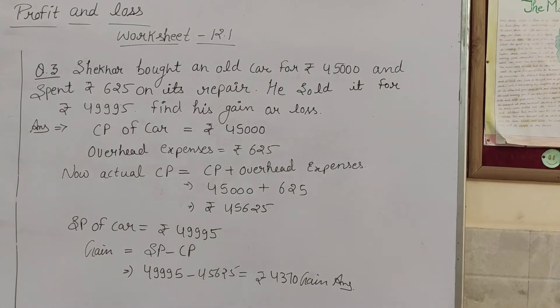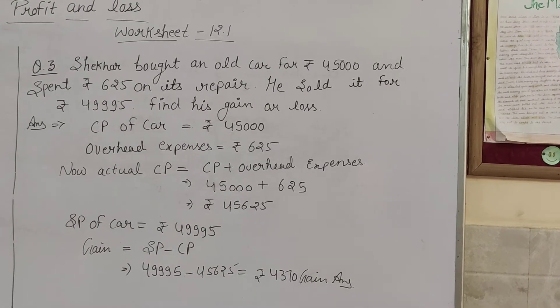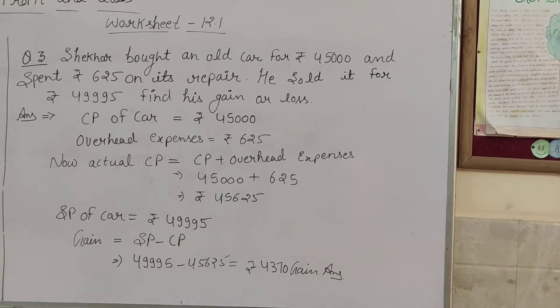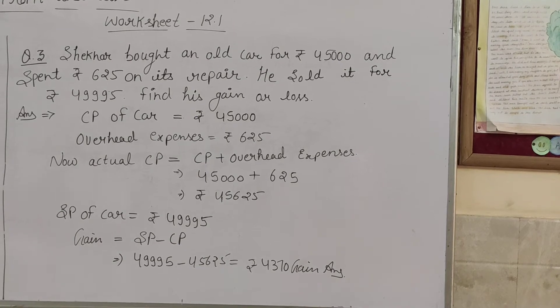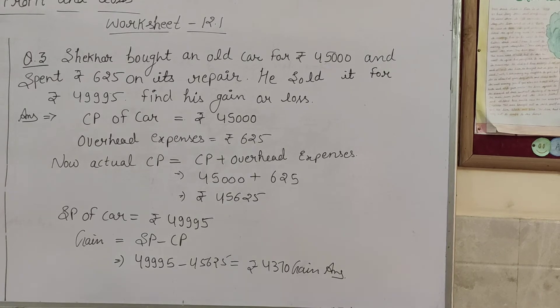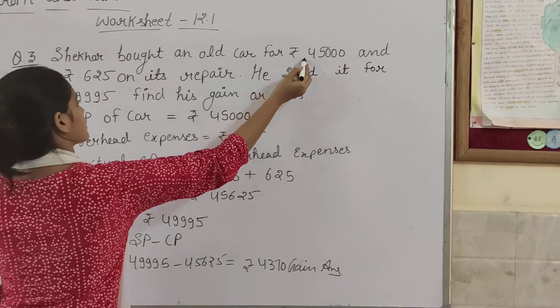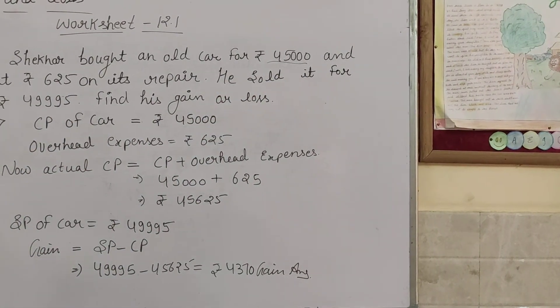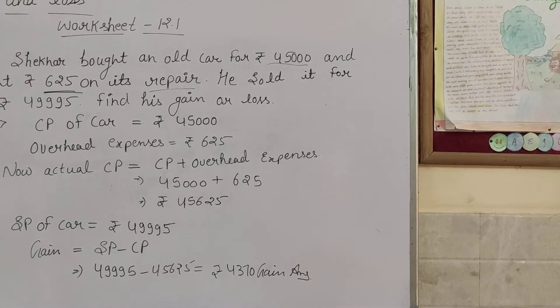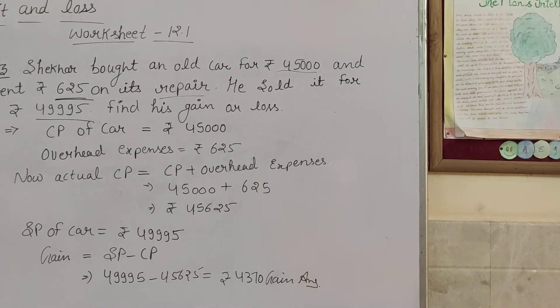Next question, question three: Shekar bought an old car for ₹45,000 and spent ₹625 on its repair. He sold it for ₹49,995. Find his gain or loss. Shekar bought an old car for ₹45,000, then he had to repair it, spending ₹625 on repairs.